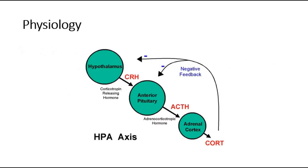For the physiology of the cortisol pathway, first the hypothalamus secretes corticotropin-releasing hormone to stimulate the anterior pituitary gland to release adrenocorticotropic hormone, ACTH. This ACTH will then stimulate the adrenal glands to produce cortisol. Any defect in this axis will cause excessive cortisol.